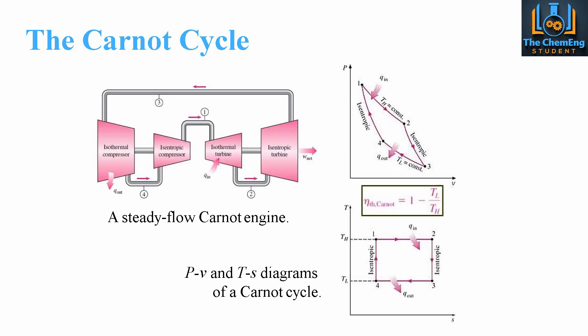The typical schematic would look something like this — this is for a steady flow Carnot engine. We can express these on PV and TS diagrams, and we'll look at them in more detail later on.